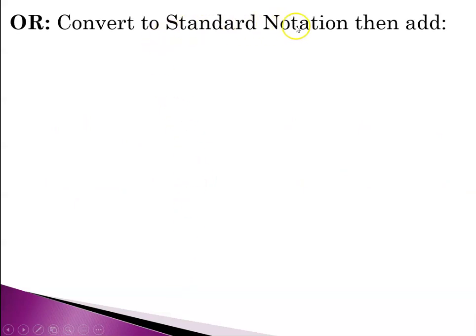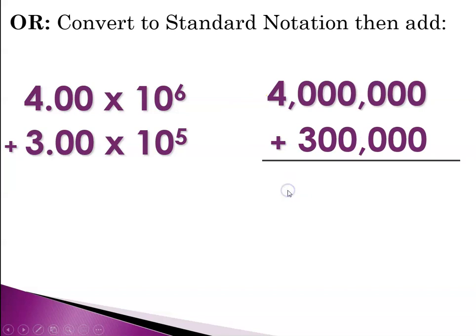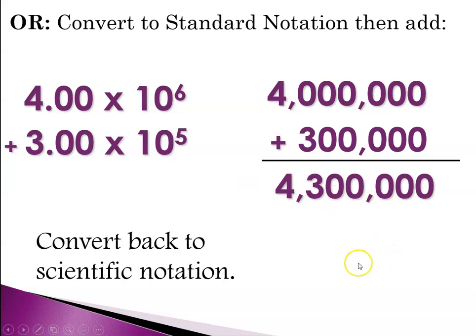The other way is to convert them to standard notation and then add. So here we have 4 times 10 to the 6 and 3 times 10 to the 5th, so that's 4 million plus 300,000. So then when we add them up we get 4,300,000, and then we could convert that back to scientific notation and that would be our 4.30 times 10 to the 6. And I'll just remind you here briefly: this number had 3 sig figs, this number had 3 sig figs, and our answer has 3 sig figs. Just by going back and forth between standard and scientific notation, we don't lose the number of significant digits that were in that original measurement.